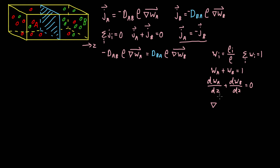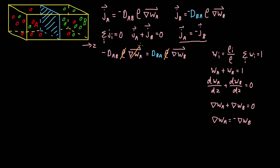Writing this more generically, the gradient of the mass fraction of species A plus the gradient of the mass fraction of species B is equal to zero. In other words, the gradient of the mass fraction of A is equal to the negative of the gradient of the mass fraction of B. Coming back to our equation, we can cancel a lot of things: the density is the same on both sides, and the gradient of species A cancels with the gradient of species B, accounting for the negative sign in their relationship.